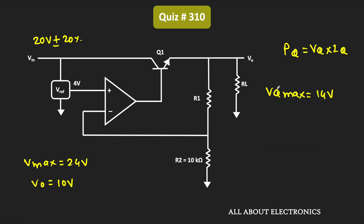Now let us find the current IQ. This current IQ will be the summation of the current IL plus the current flowing through this voltage divider — let's call this current Ix. Since the op-amp is an ideal op-amp, no current is flowing into the op-amp terminal. That means this current Ix will also flow through this 10kΩ resistor.